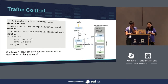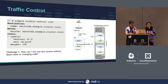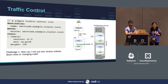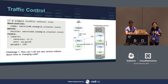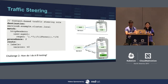Traffic control helps us solve challenge number one: how do we roll out a new version without downtime or changing any existing code? This example gives you a simple route rule where you can specify that in your production environment you want 100% of traffic going to a particular version. You don't have to change any of your application code. You can just apply this route rule using kubectl or istioctl and it takes effect immediately on your system.